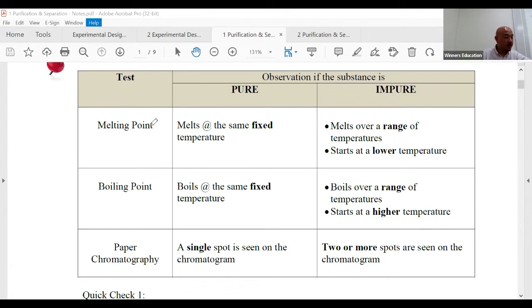You can test melting point or you can test its boiling point. For both of these methods, very simple: if it's pure, they will melt or boil at a fixed temperature. So for example, water H2O, we all know that the melting point is zero degrees Celsius and boiling point is a hundred degrees Celsius.